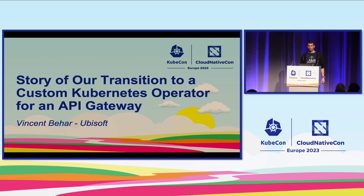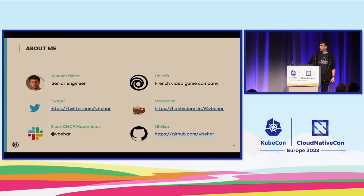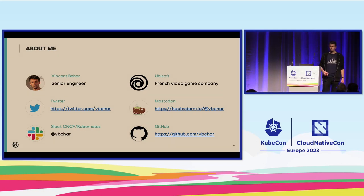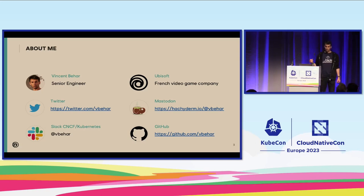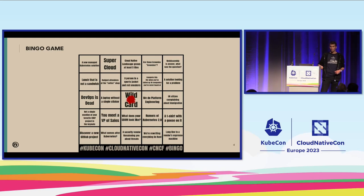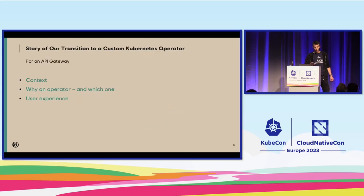I'm going to talk about custom operators on the API Gateway. First, a little bit about me. My name is Vincent. I'm working at Ubisoft. You can find me on social media — Twitter, Slack, GitHub, and so on. And yeah, before we start, I don't know if you know the bingo game, but if you ever get bored during the session, feel free to play and tell me at the end if you get any points. But hopefully it will be a good session — you won't be bored.